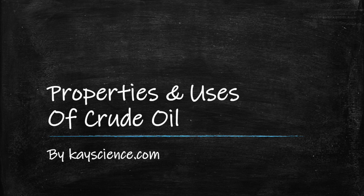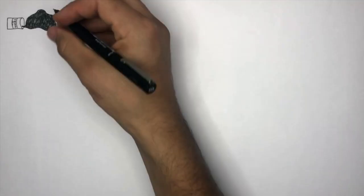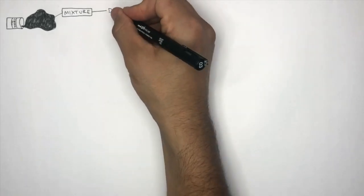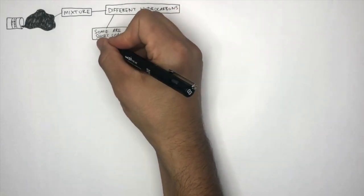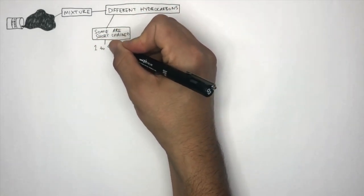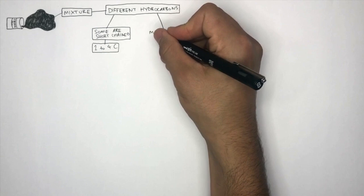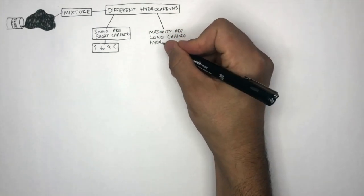Properties and uses of crude oil by kscience.com. Crude oil is a mixture of different hydrocarbons. Some are short-chained where they have one to four carbons, but the majority are long-chained hydrocarbons.